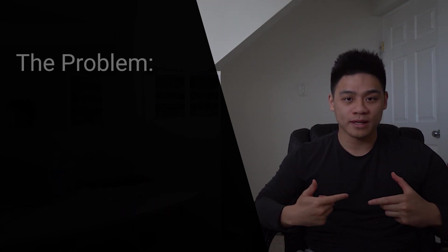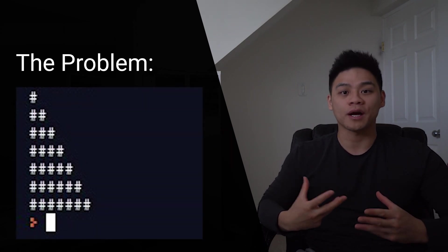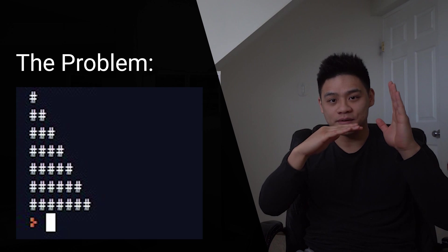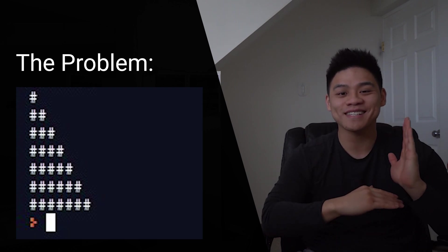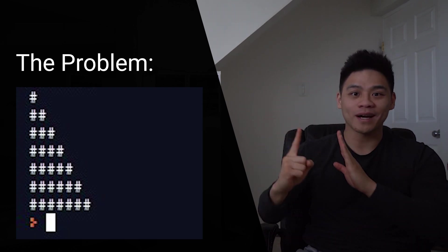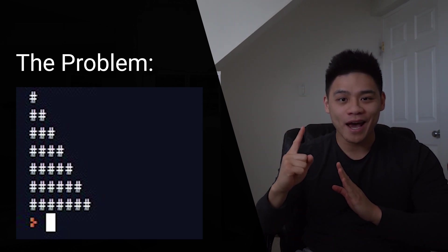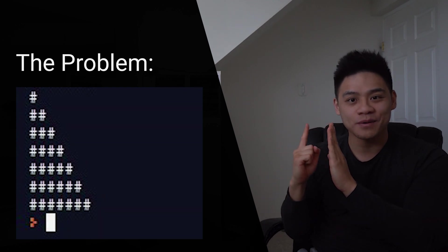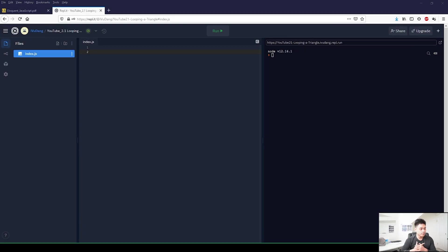Our problem — the task at hand — is we want to output a triangle composed of seven rows of hashtags. You'll start with one hashtag and then for each sequential row the hashtag count will increase by one. We're going to start with the first method which is using the for loop — this is the solution provided by the textbook.